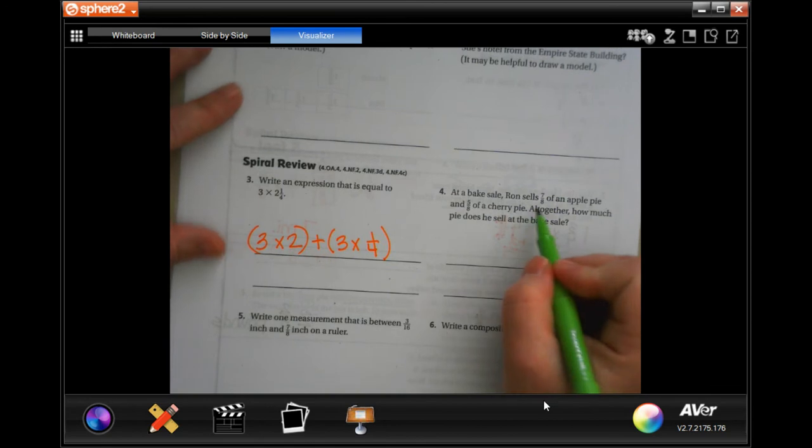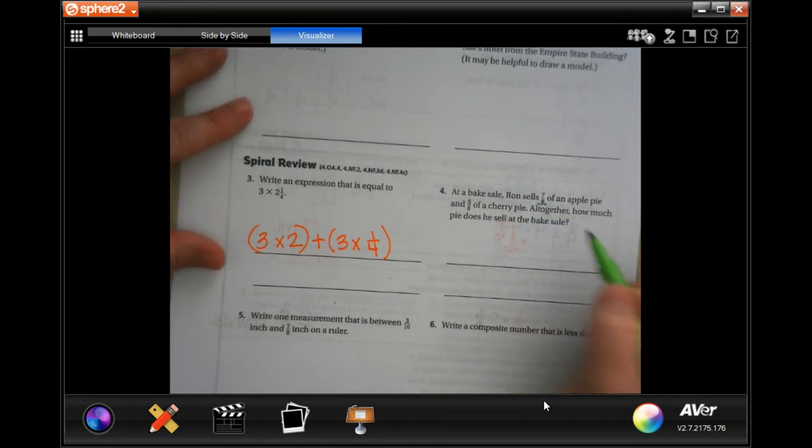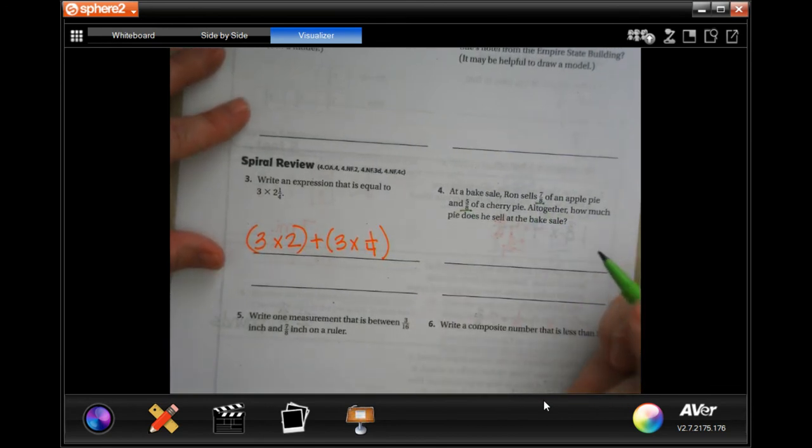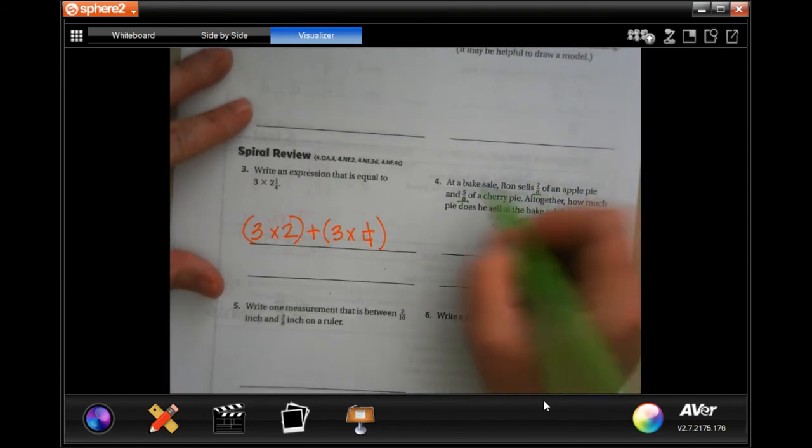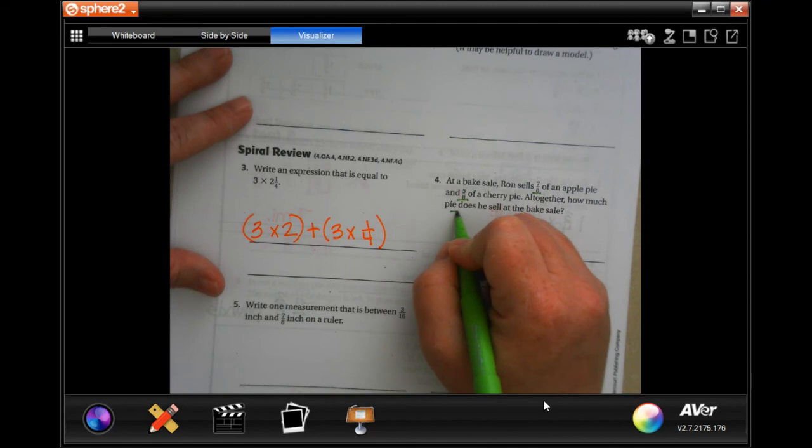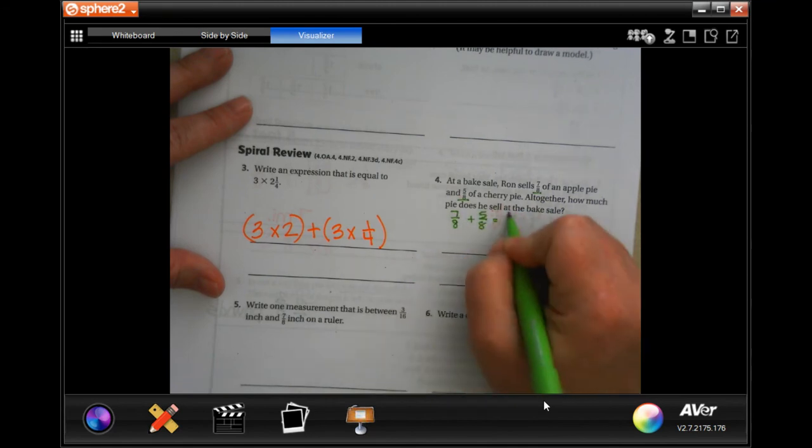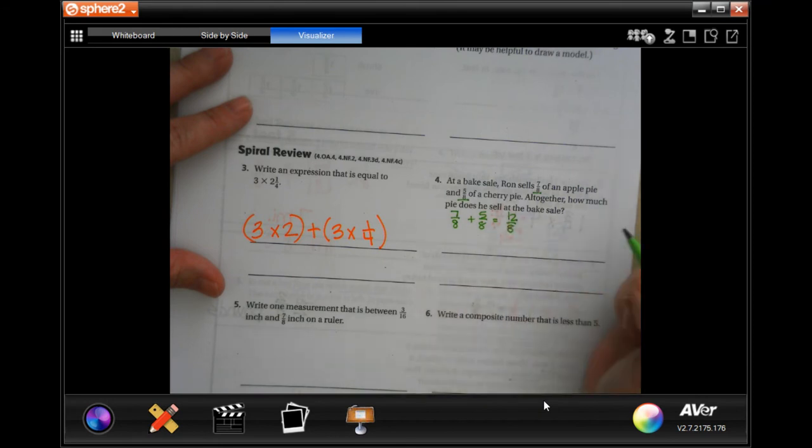So, at a bake sale, Ron sells seven-eighths of an apple pie and five-eighths of a cherry pie. All together, how much pie does he sell at a bake sale? So, seven-eighths plus five-eighths equals twelve-eighths.